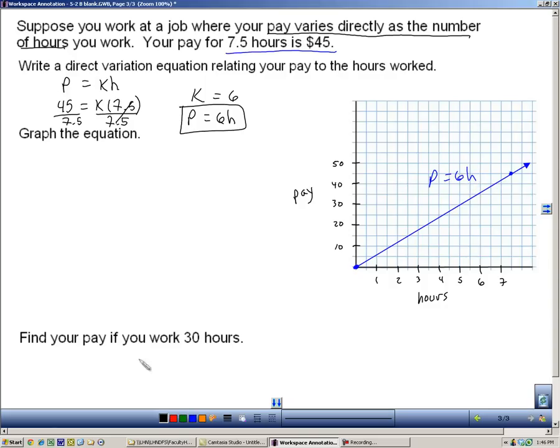Now I have to find my pay if I work for 30 hours. Well, here's the benefit of that. I can go right here because 30 is actually on the line. So 30 hours gets me to this spot right here. And what's my pay going to be?